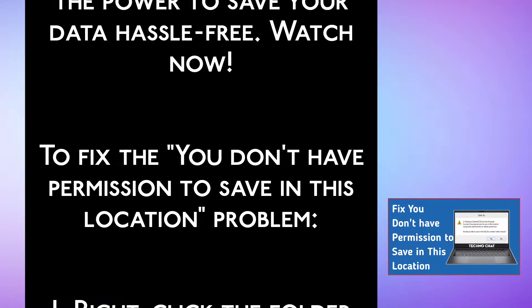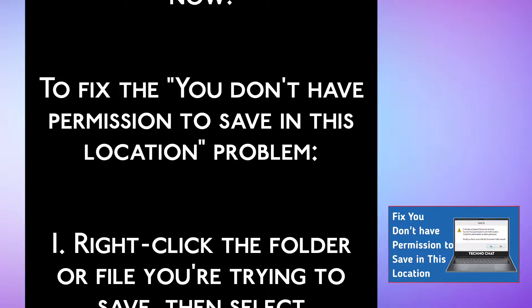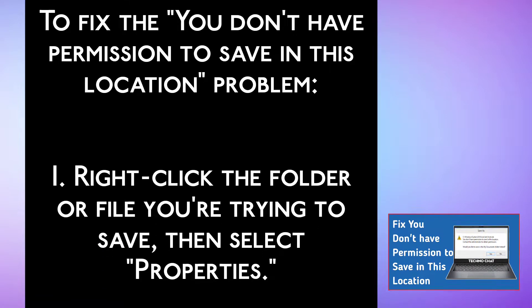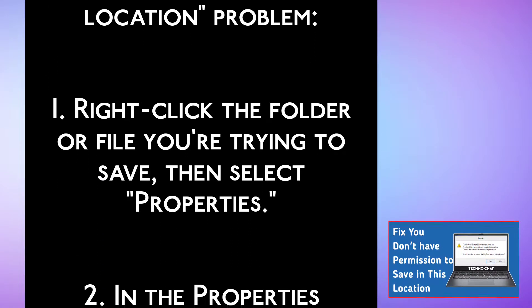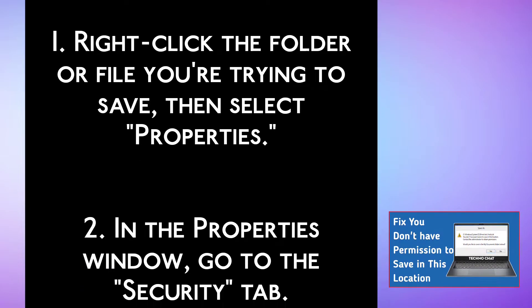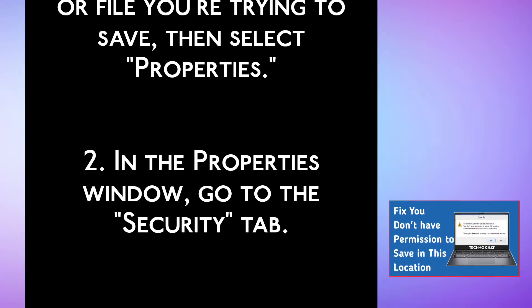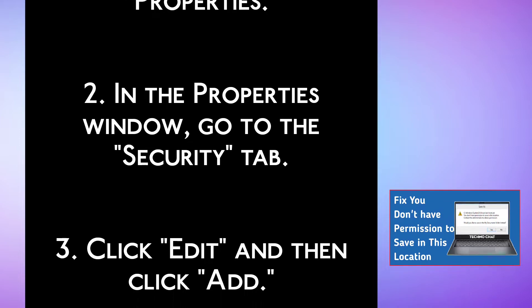To fix the 'You don't have permission to save in this location' problem: Step 1, right-click the folder or file you are trying to save, then select Properties. Step 2, in the Properties window, go to the Security tab.